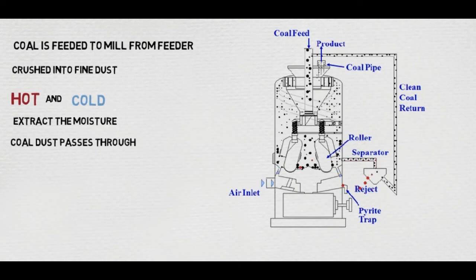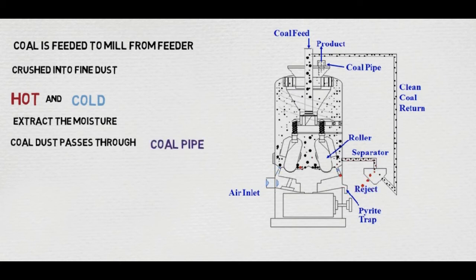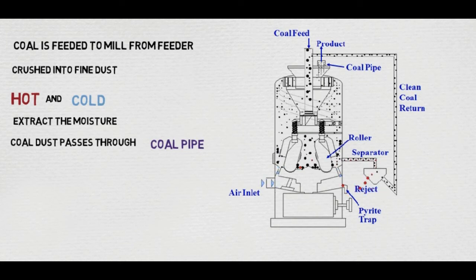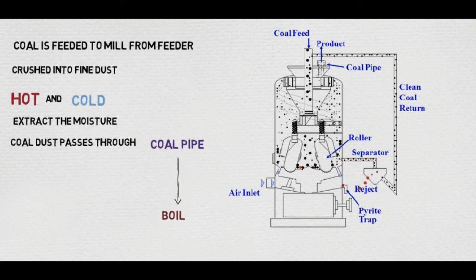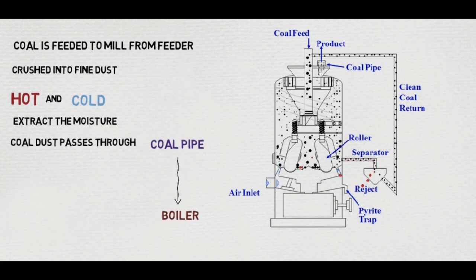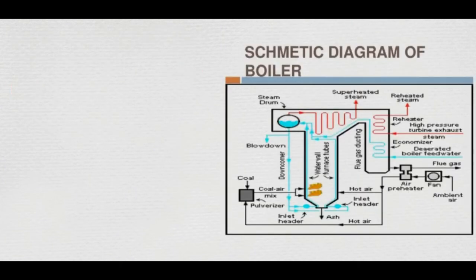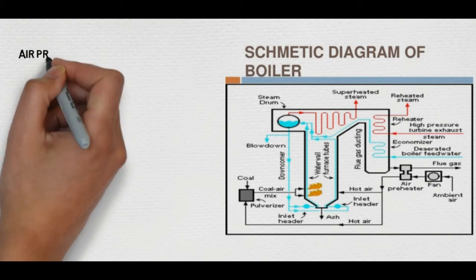Finally, the coal dust that is prepared passes through the coal pipe and is fed into the boiler for lighting up the boiler. This is a schematic diagram of a boiler.